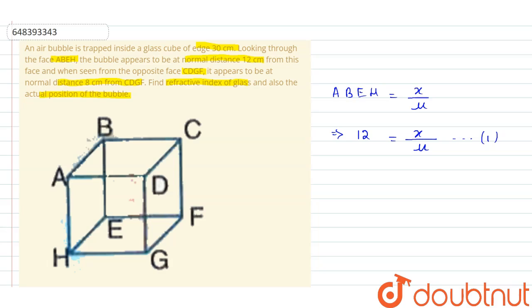Now again, the apparent distance of bubble from refracting surface CDGF can be written as 30 minus X by mu, and this value is given as 8. So 8 equals 30 minus X by mu. Let's call this equation number 2.